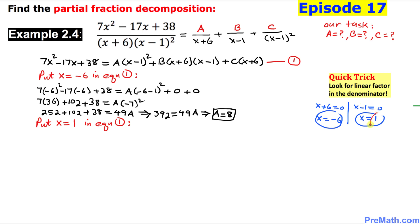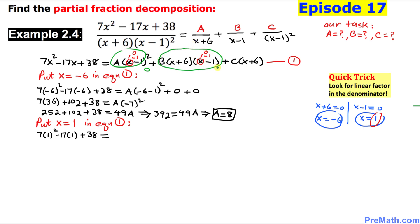Now let's look at x equal to 1. We put x equal to 1 into Equation 1. On the right-hand side, the A term has 1 minus 1 equals 0, making that whole term zero. Likewise, the B term also has 1 minus 1 equals 0, making that term zero as well.